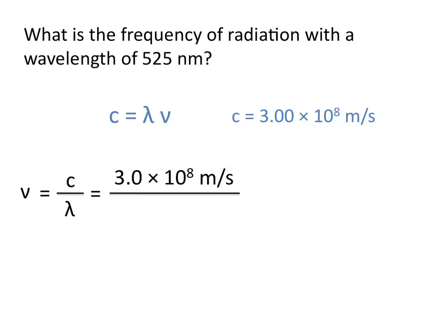Again, C is a constant and will always be 3 times 10 to the 8th meters per second. We can then divide by the wavelength, 525 nanometers.